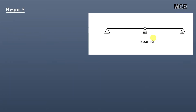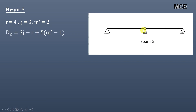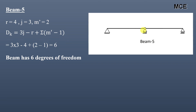For beam five, there are four reactions and three joints: one, two, and three. There is one internal hinge at the top of the roller, so m′ = 2, as there are two members meeting at this internal roller. The value of dk = 6, meaning the beam has six degrees of freedom. If axial deformations are neglected, there are two members, so dk = 6 − 2 = 4.